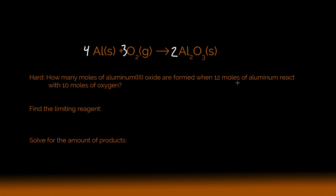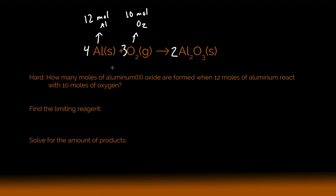We have 12 moles of aluminum and 10 moles of oxygen. One thing that stumps students early on is that these amounts can be whatever you want — they have nothing to do with the coefficients in the balanced equation. We're going to use the coefficients to determine how many reactions we can run. The amounts you put in, and which you designate as the limiting reagent, will determine how many reactions are possible.